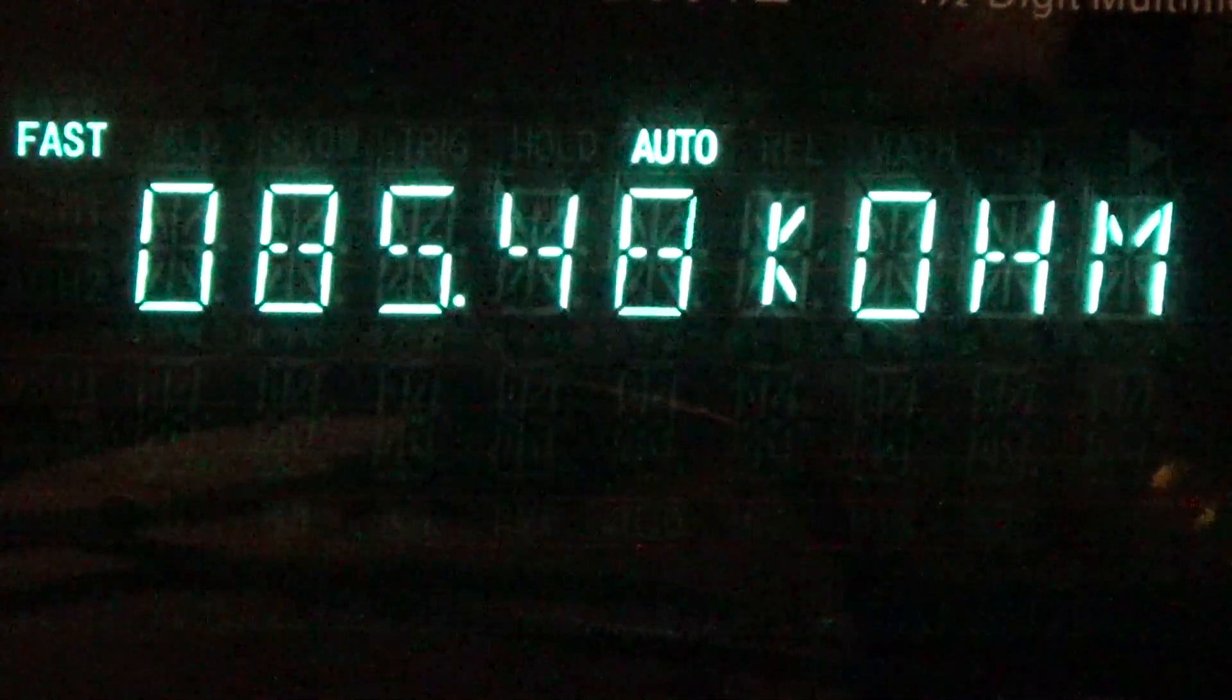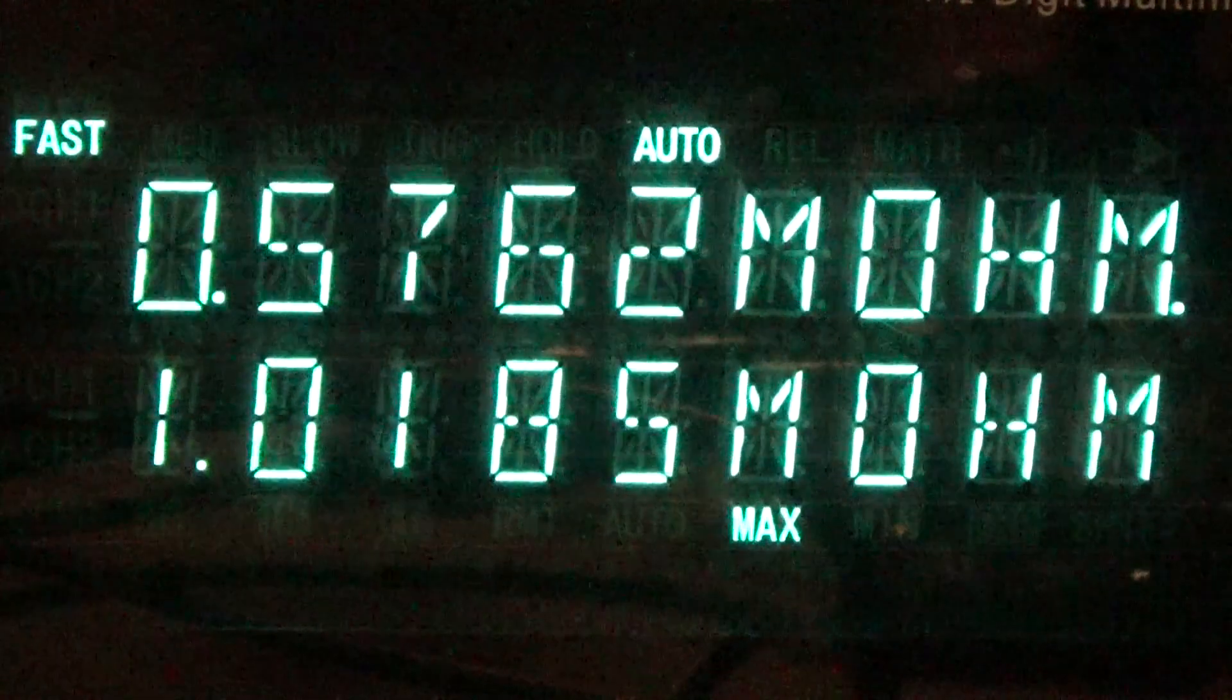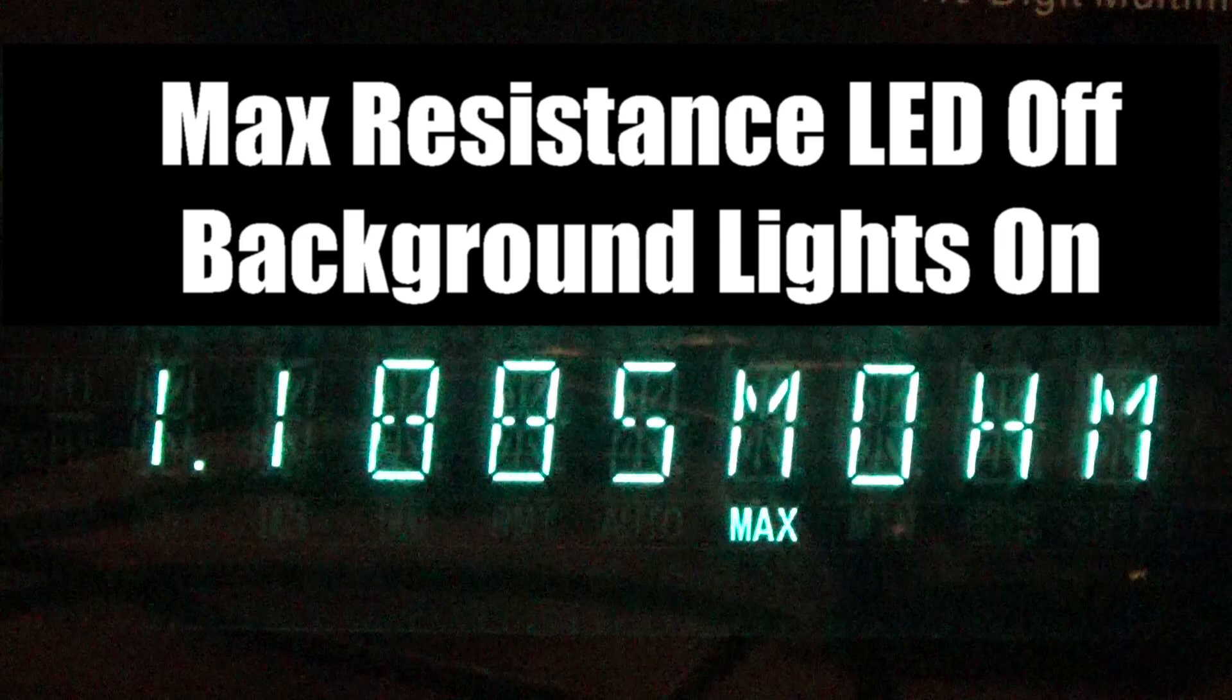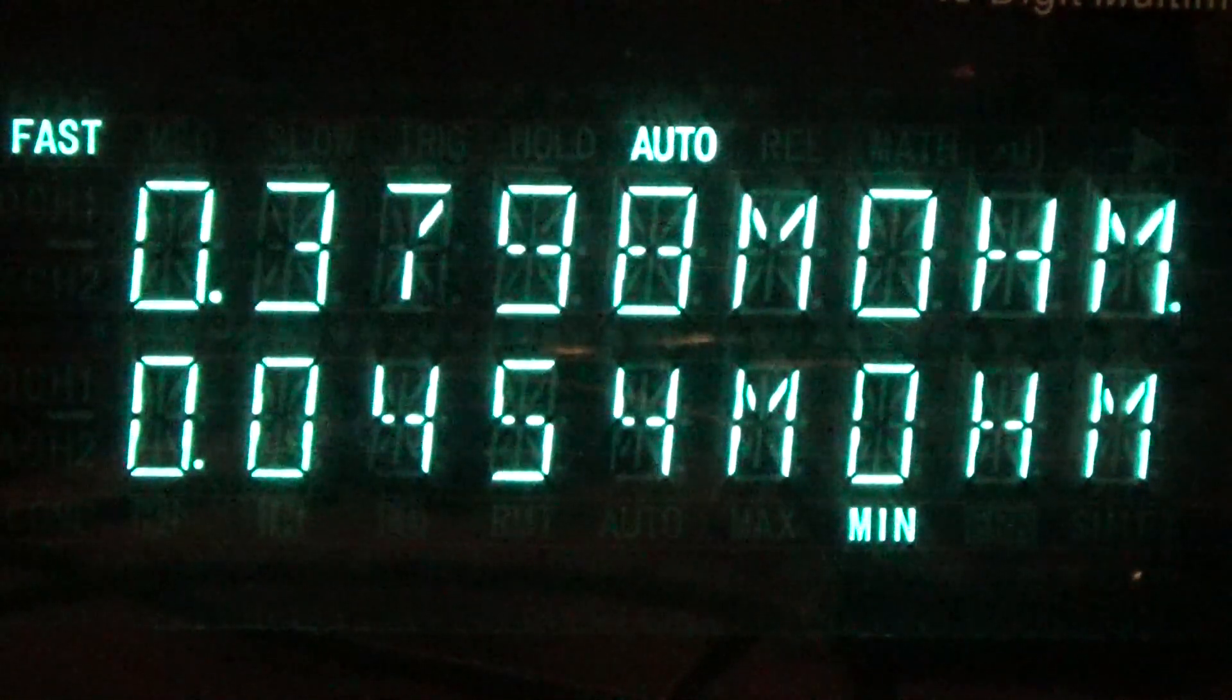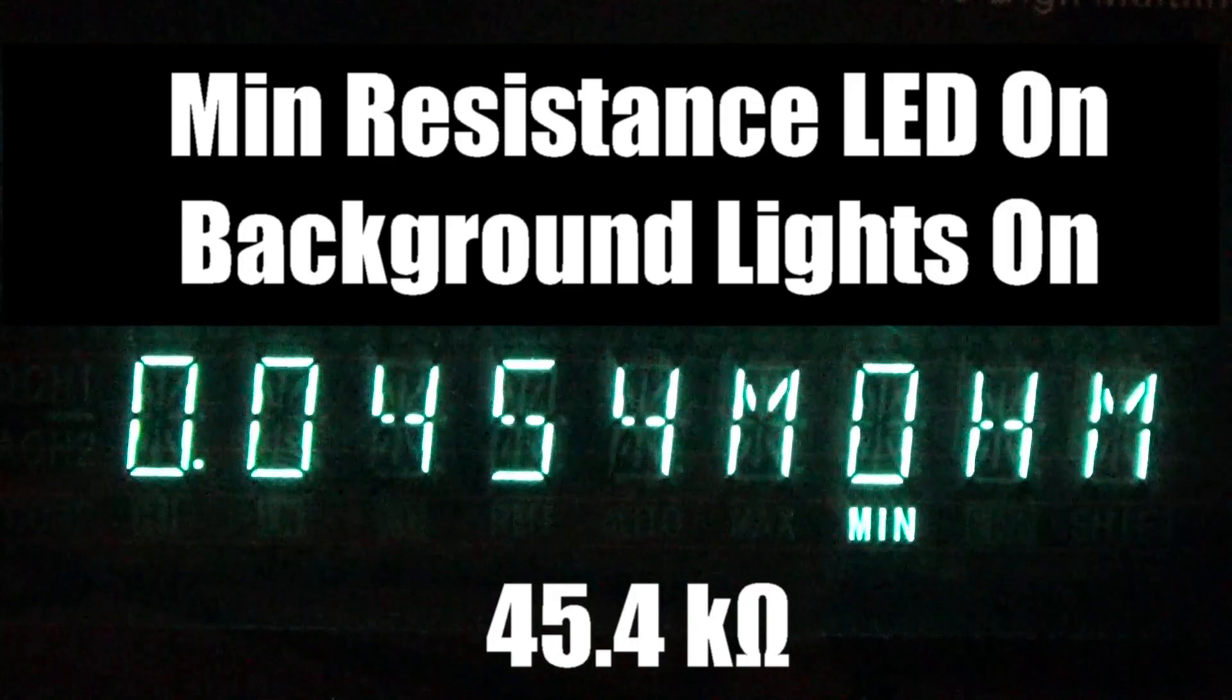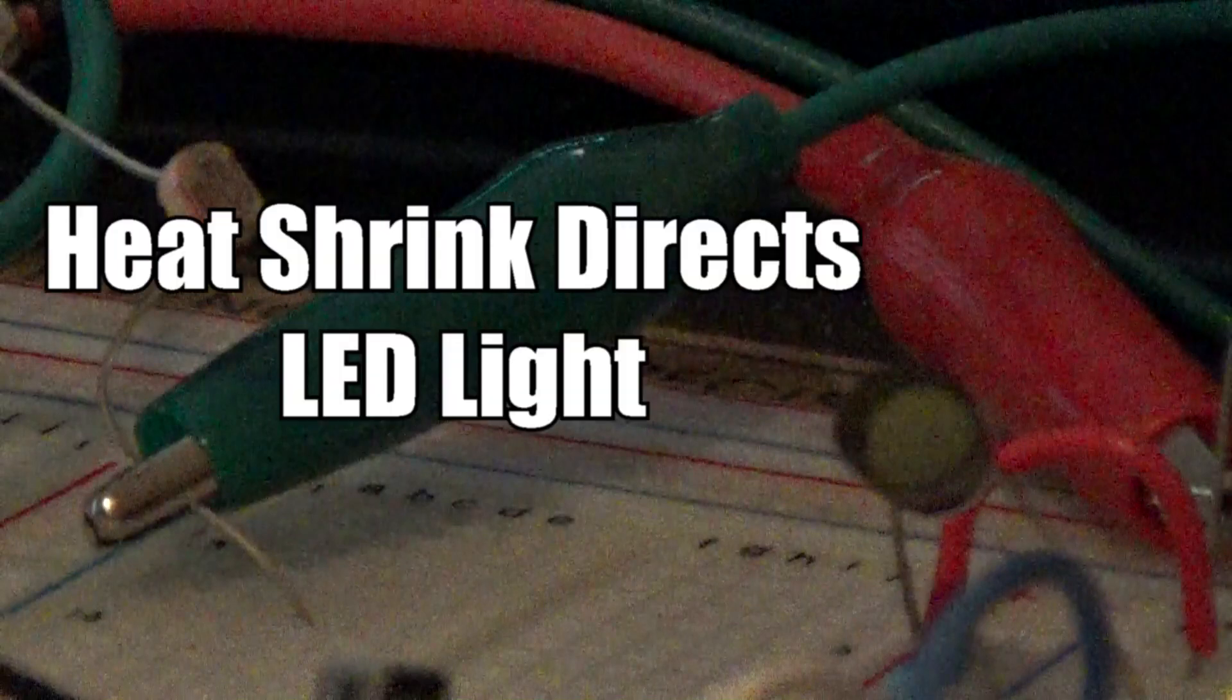We can use heatshrink tubing to solve this problem. The heatshrink tubing not only directs the LED's light more directly to the photoresistor, but shields it from the light in the environment. We'll get consistent results if we shield the photoresistor and the LED. Here are the measurements after we shield the photoresistor. With the lights on in the background and our photoresistor shielded, we get about 1.1885 megaohms when the LED is off. We get a minimum resistance measured of 0.0454 megaohms, which is 45.4 kilohms. The shielding not only provides more consistent measurements, but allows us for a more dynamic range of resistance change.